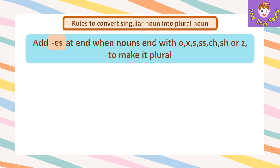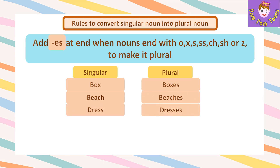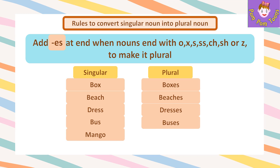Add ES at the end when nouns end with O, X, S, SS, CH, SH, or Z to make it plural. For example, box → boxes, beach → beaches, dress → dresses, bus → buses, mango → mangoes, quiz → quizzes.